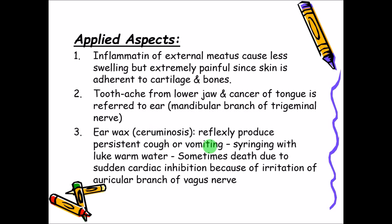Sometimes earwax gets accumulated and does not come out, at which time the doctor will try to flush it out. During flushing out of earwax, it can reflexively produce persistent cough or vomiting. The presence of earwax itself can produce cough as well as vomiting. So especially in the case of children with persistent cough and vomiting, the doctor will examine the ear to check whether there is accumulation of wax, and it can be easily removed.